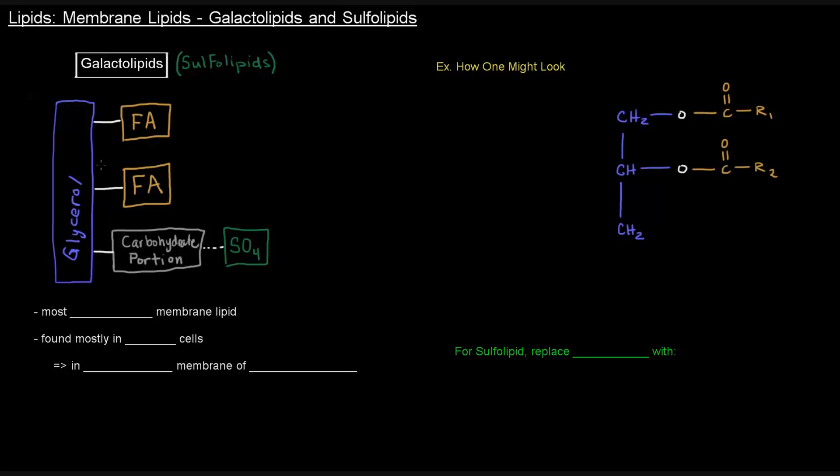So from before, the membrane lipids we saw that we had galactolipids and sulfolipids that have a glycerol backbone, two fatty acetals, and a carbohydrate portion. If that carbohydrate portion has a sulfate group attached to it, it's a sulfolipid. If not, it's a galactolipid.